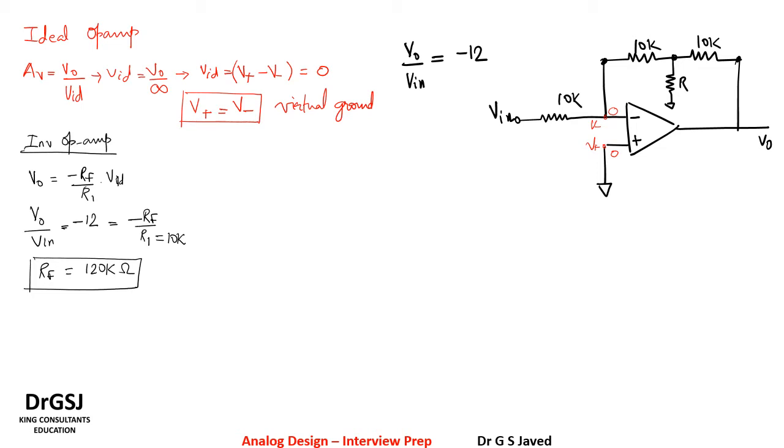Now to find the value of R, we need to effectively find the value of R_f. So this circuit in the feedback given by the two 10k resistors and R effectively forms the R_f. Now to find the value of R, let us find out what is the value of current that is flowing through the circuit.